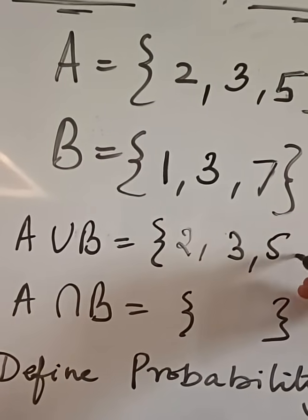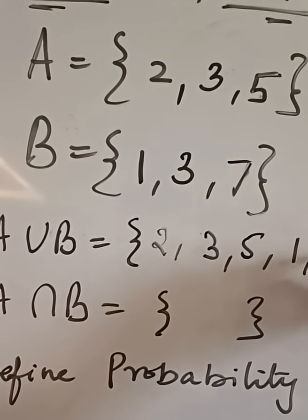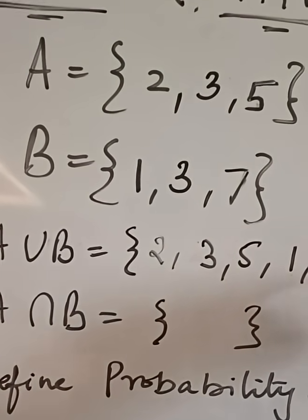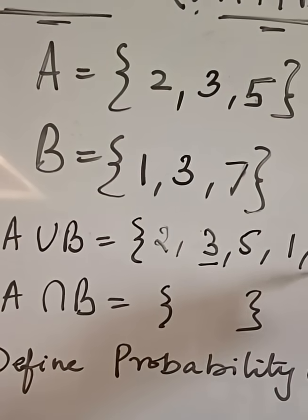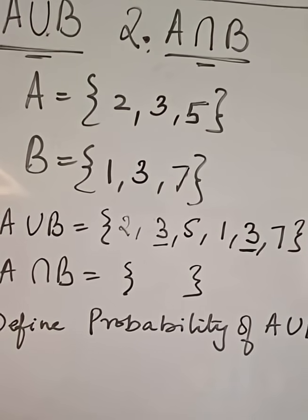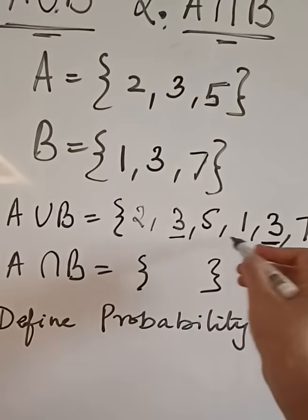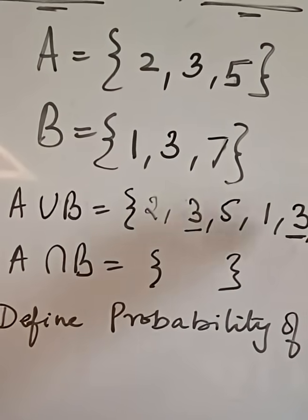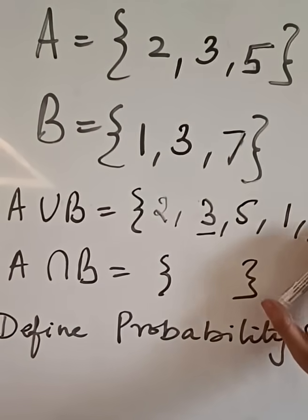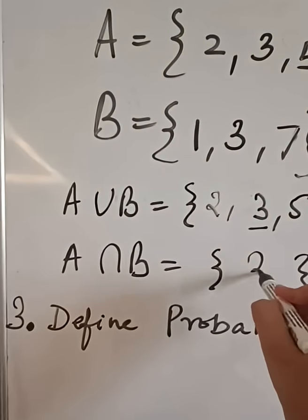then all the elements from B and remove the duplicate elements if there are any. So, here the duplicate element is 3. So, we will remove one of the duplicate elements and we will put it here in the intersection.